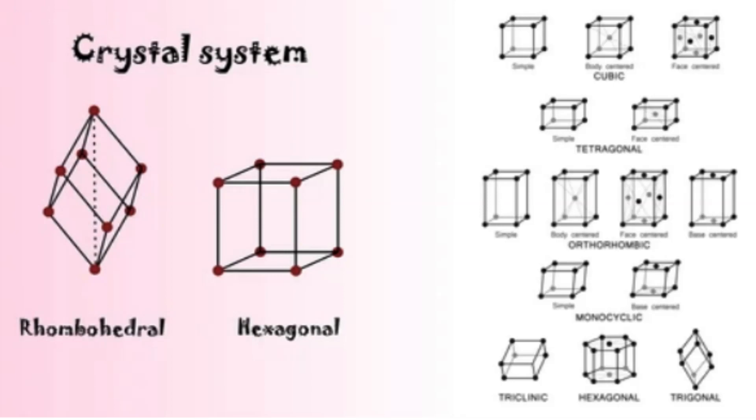Tetragonal system. In this system, there are two axes of equal length that intersect at right angles, and a third axis that is perpendicular to the other two and of a different length. Minerals in this system often form prismatic or dipyramidal crystals. Zircon and rutile are examples of minerals in the tetragonal system.